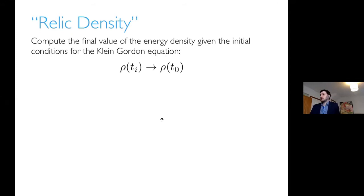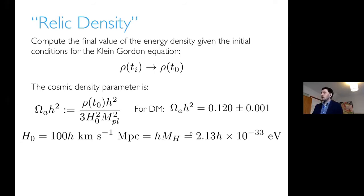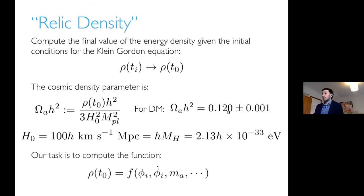We need to evaluate the energy density to find what the dark matter relic density is — compute the final value of the energy density given the initial conditions for the Klein-Gordon equation. We take initial conditions at some time t_i and work out the energy density at the final time t_0. The cosmic density parameter omega_a h-squared is rho times h-squared over 3 H_0-squared M_Planck-squared. For cold dark matter, from the CMB, omega h-squared should be 0.120 plus or minus 0.001. Our task is to compute rho(t_0) given the initial field value, possible initial time derivative, axion mass, and any other relevant parameters.